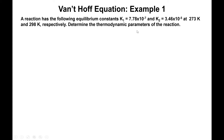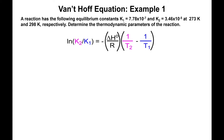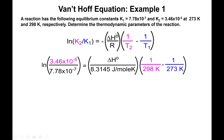For our example, a reaction has two given equilibrium constants at two temperatures. We want to find the thermodynamic parameters. We use the two-point Van't Hoff equation to find ΔH first, since it's the slope. K2 is 3.46×10⁻⁵ at T2 = 298 K, and K1 is 7.78×10⁻⁷ at T1 = 273 K. Make sure not to swap the order by mistake.